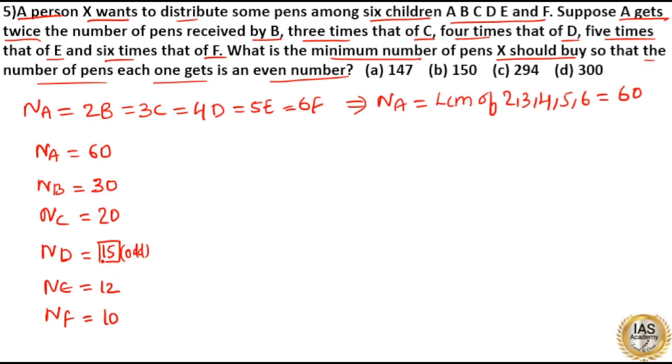Now except D all others are even number. The question clearly says that each one should get an even number of pens. So multiply all these numbers with 2.